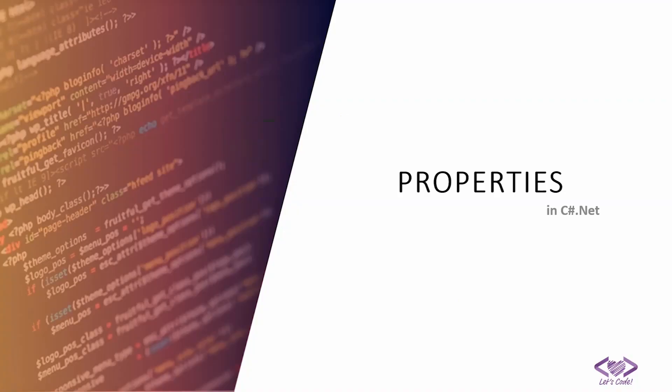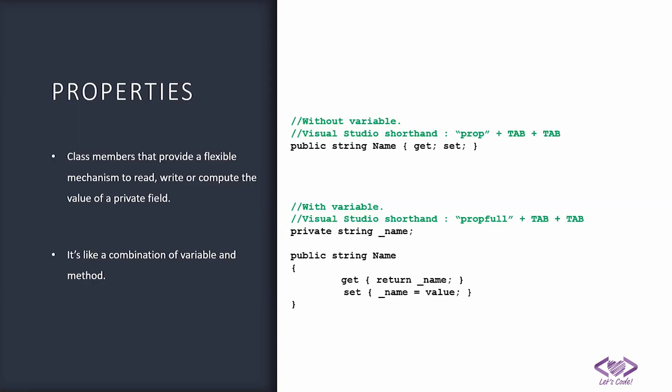Hi friends, welcome to another video of Codiligent. In this video we are looking at a very simple topic: properties. We will try to understand in detail what exactly properties are in C# and why we need them. The properties definition given by Microsoft says: class members that provide a flexible mechanism to read, write, or compute the value of a private field.